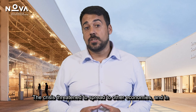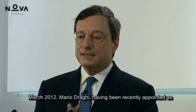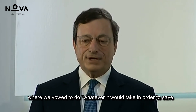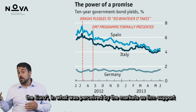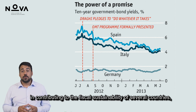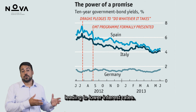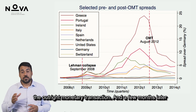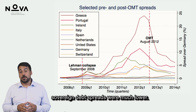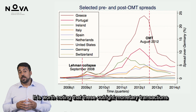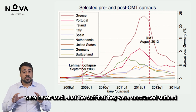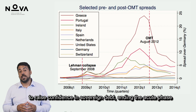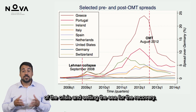The crisis threatened to spread to other economies. In March 2012, Mario Draghi, having been recently appointed as head of the European Central Bank, gave a famous speech vowing to do whatever it would take to save the euro. This was perceived by markets as firm support for the fiscal sustainability of several countries, leading to lower interest rates. By August, the first formal mechanism of support — outright monetary transactions — was introduced, and sovereign debt spreads fell sharply. Notably, these outright monetary transactions were never actually used; just the announcement sufficed to collapse uncertainty and raise confidence.